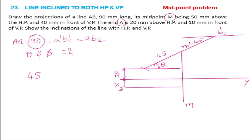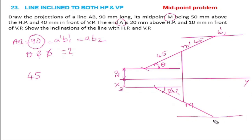In the top view, from M with a compass set to 45mm, draw an arc. That gives the top view inclination — phi, the true inclination with the vertical plane. After that, extend the same 45mm for another 45mm. Then draw a locus line to get point B2.